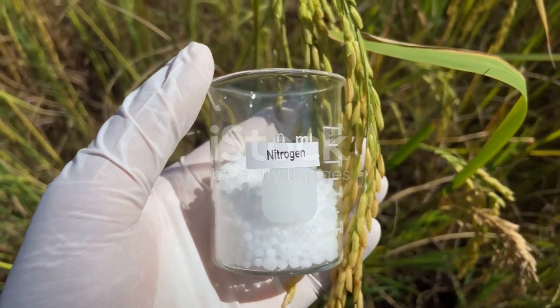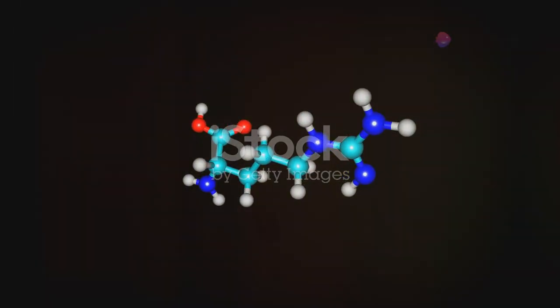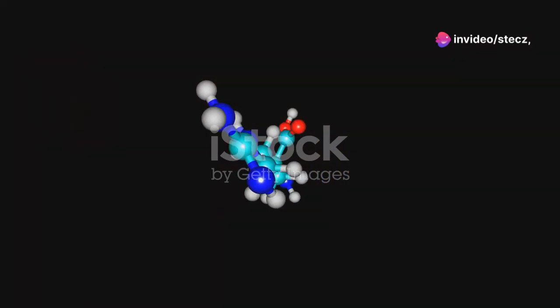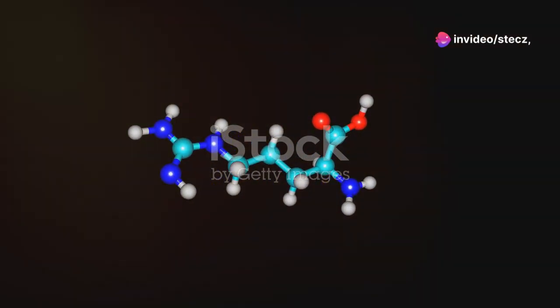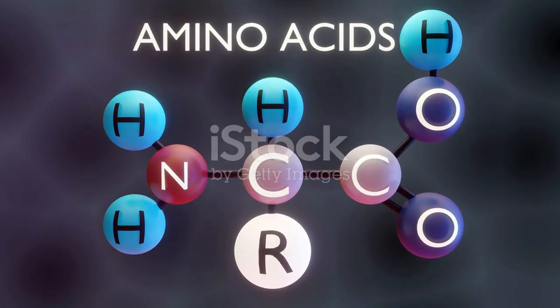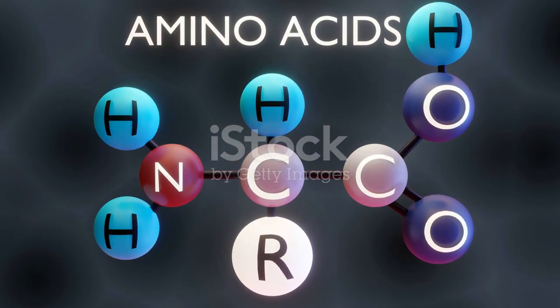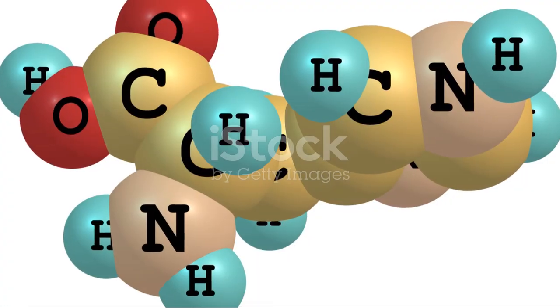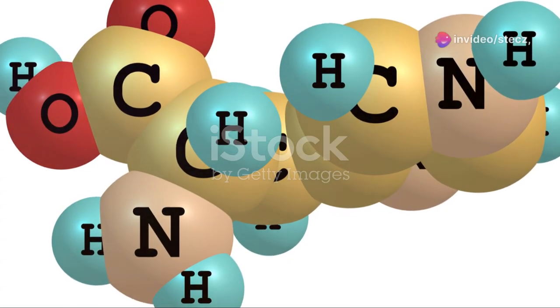At the heart of nitrogen's importance in plant life lies its role in the synthesis of amino acids, the fundamental building blocks of proteins. Proteins are involved in virtually every aspect of plant growth and development. Amino acids contain both an amino group, NH2, and a carboxyl group, CO, along with a unique side chain.